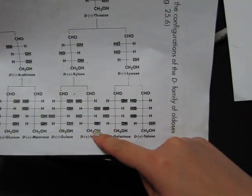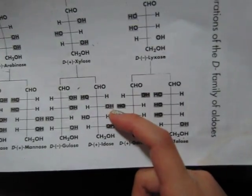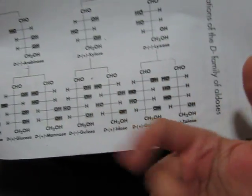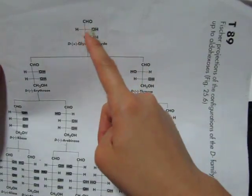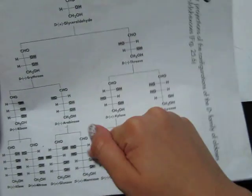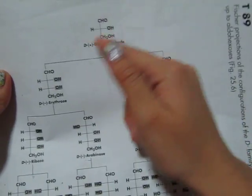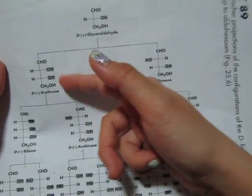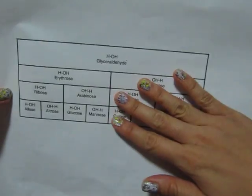Now why is that important? Because if you're asked to draw the Fischer projection of idose, you need to draw it exactly the way it is on the chart — the OH positions at each carbon. So I'm suggesting that you just memorize those top chiral carbons, because you'll be able to build these aldohexoses using your information from the previous monosaccharides they were made from.